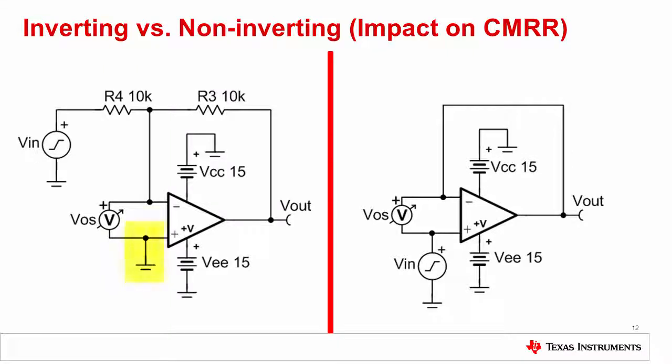In the inverting configuration, the common mode voltage of the op-amp is held at the constant DC voltage applied to the non-inverting input of the op-amp. Therefore, with a constant common mode voltage, the inverting topology avoids common mode errors as the input voltage changes.